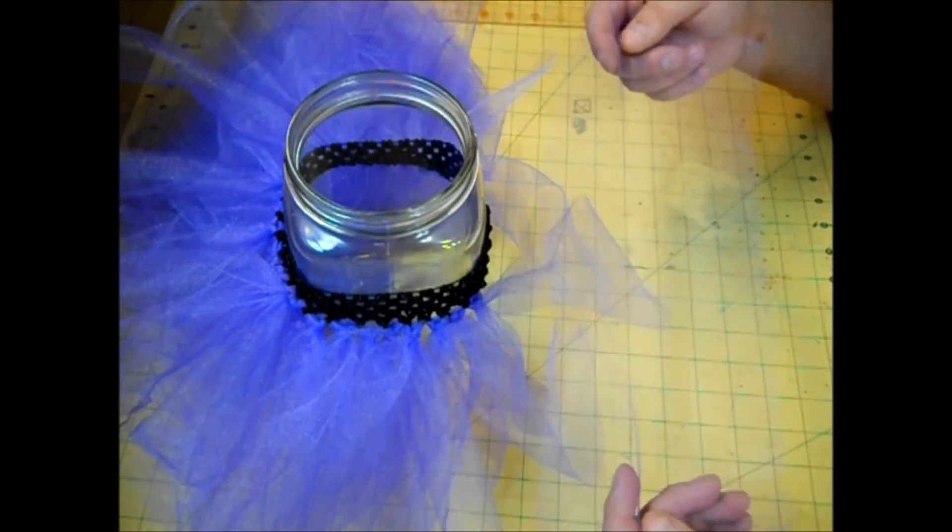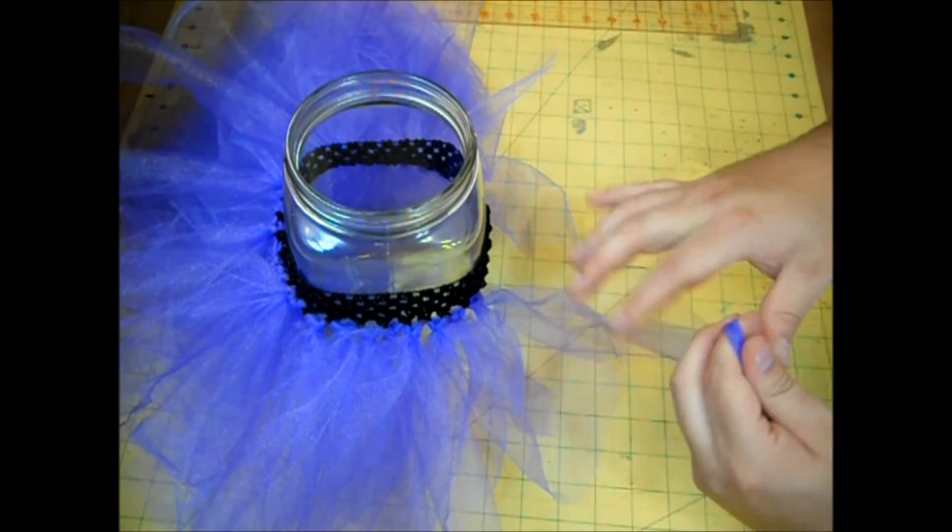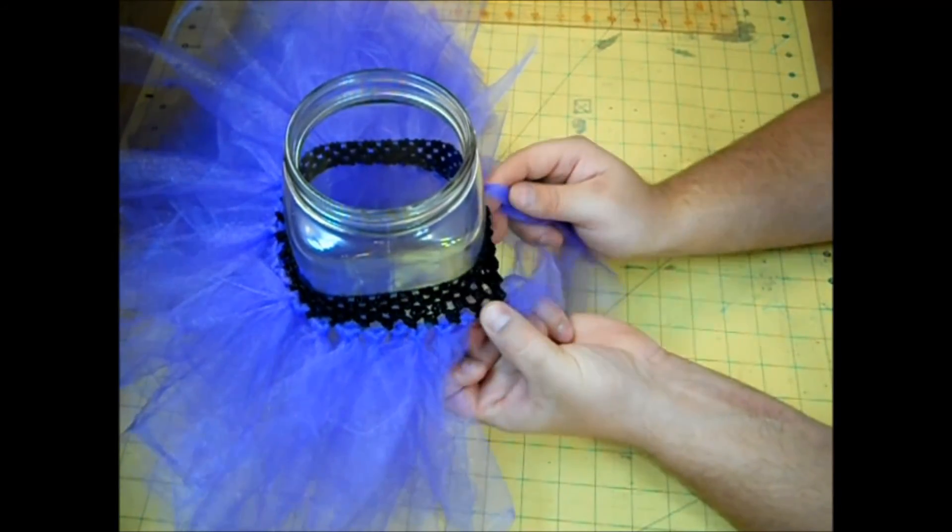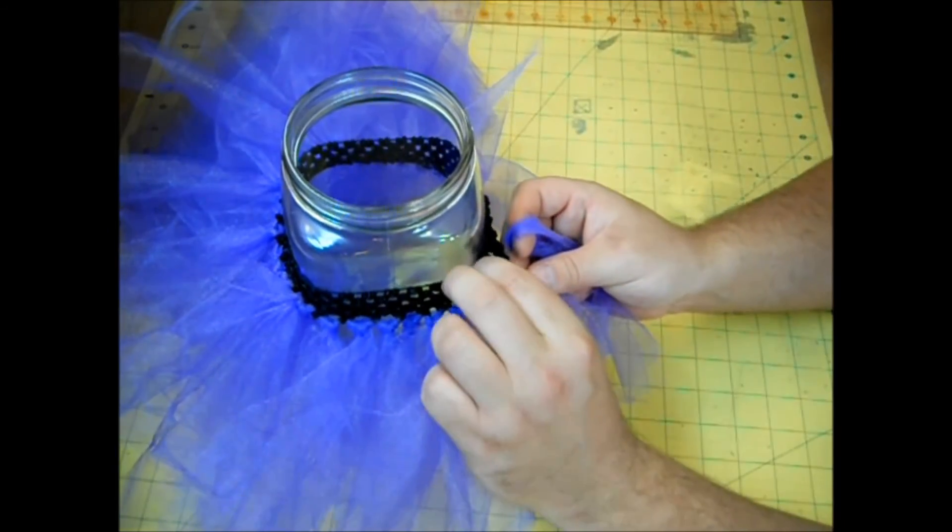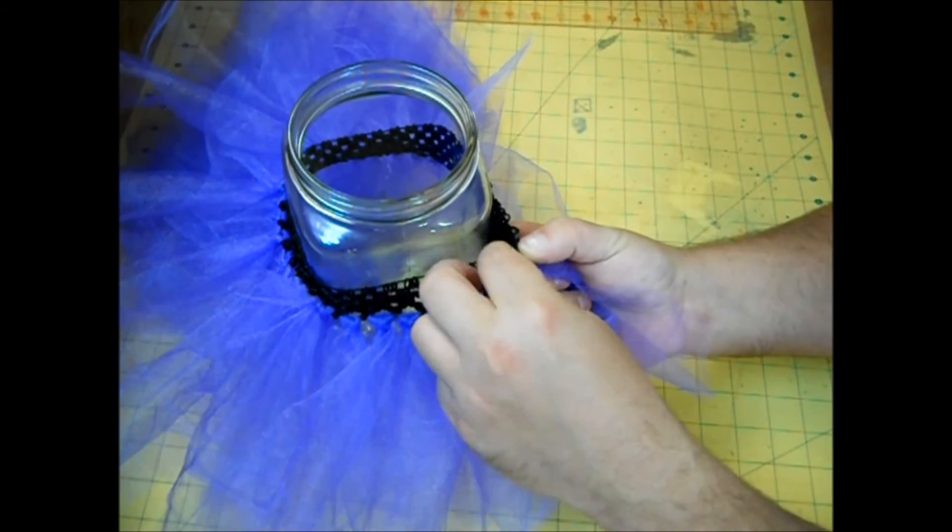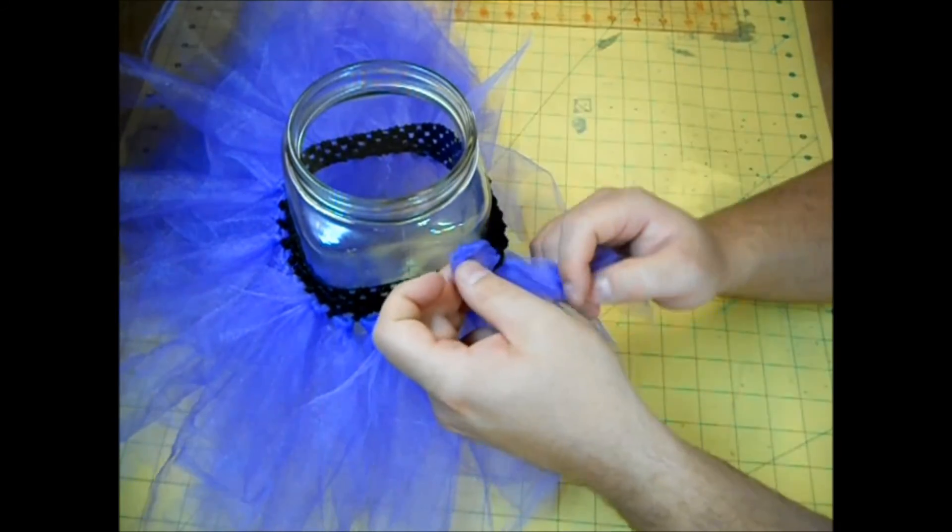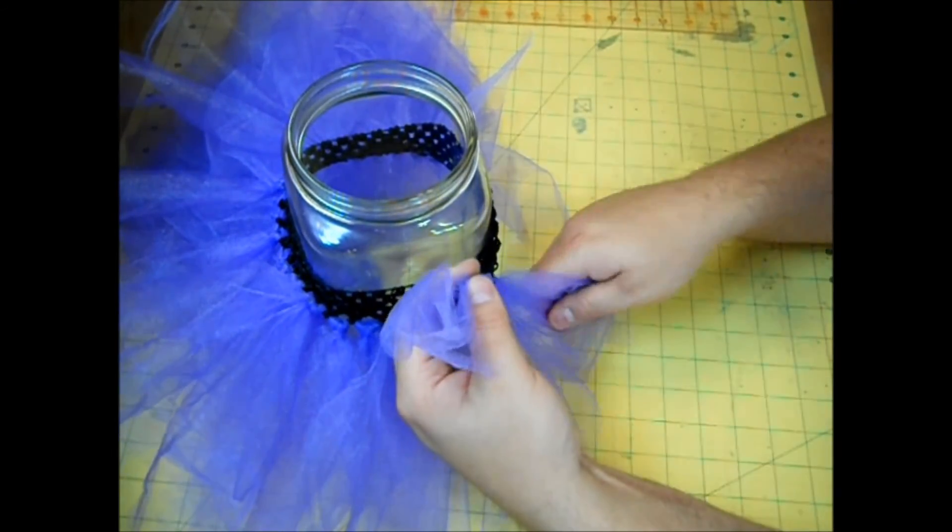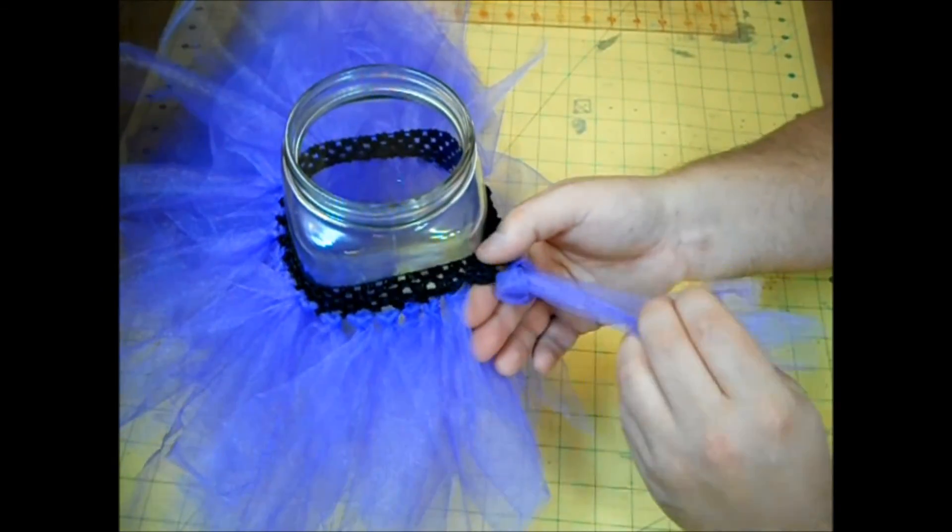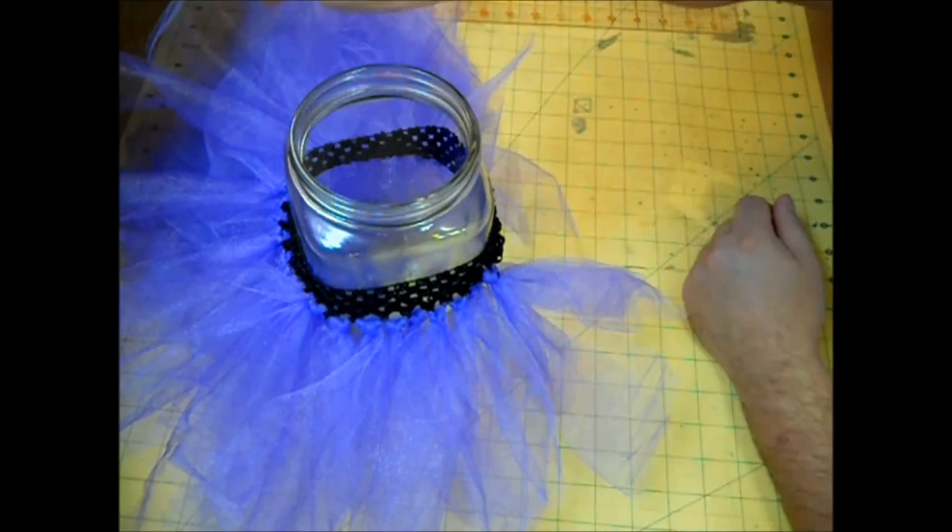And using the same process, folding it in half, give it a little twist, make a loop, and we're just going to go through that third square up. You want to make sure that you're not pulling your first layer through. And just give it a pull. Now we're going to do that all the way around.